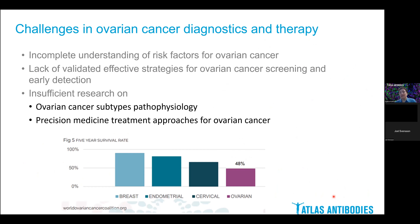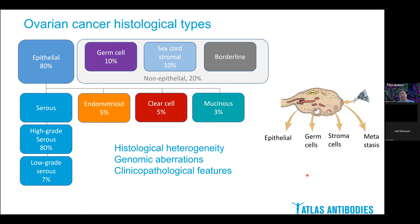The challenges in ovarian cancer diagnostics and therapy call for better understanding of ovarian cancer diversity, risk factors, and also development of effective strategies for screening, early detection, and precision medicine approaches. We need to develop more effective therapies in combination with more effective studies on the biology of the cancer to help us define the clinical course in different subtypes of ovarian cancer.